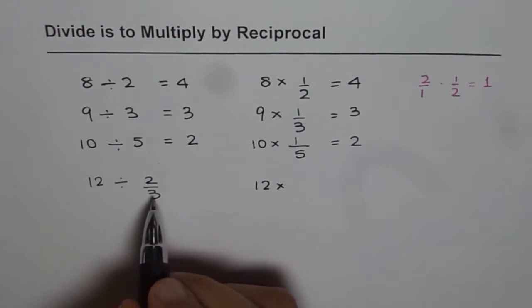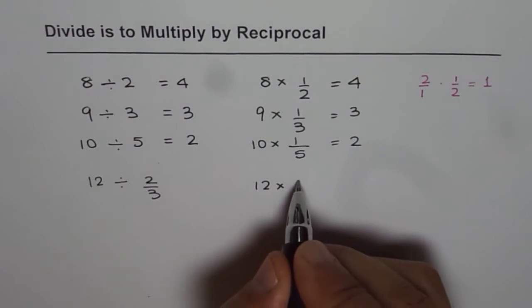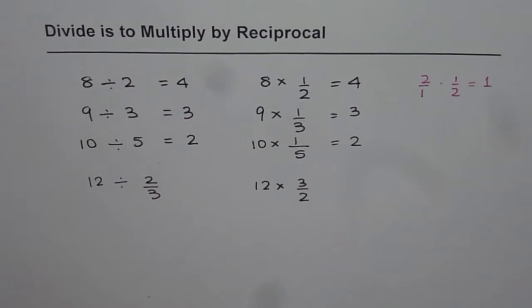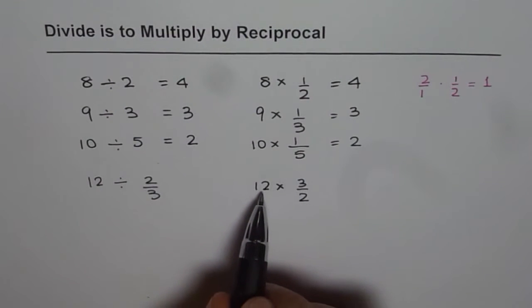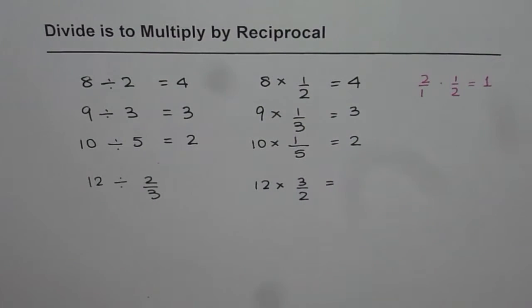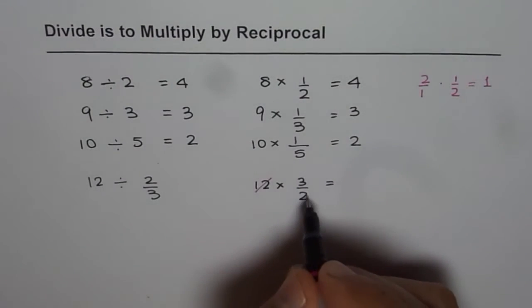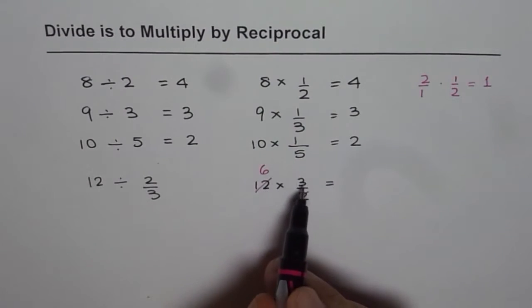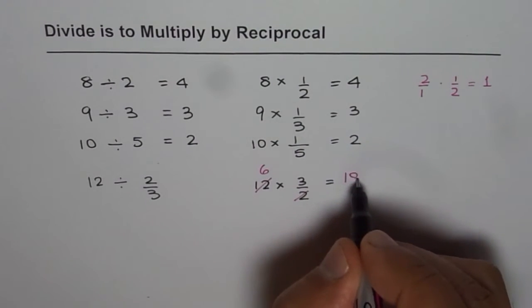What is reciprocal of 2 over 3? It is 3 over 2. That is to say that we can do half of 12 and then multiply by 3. So what do we get? We get 12 divided by 2 is 6 and when I multiply 6 by 3, I get 18. So that is what we get.